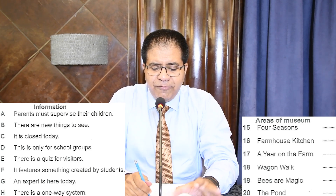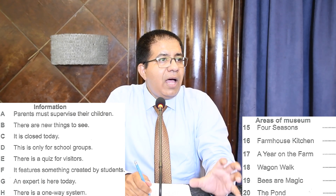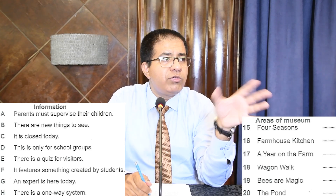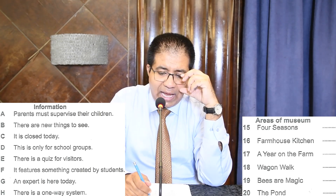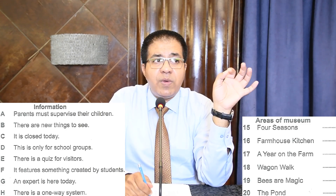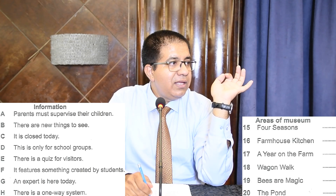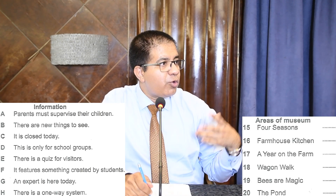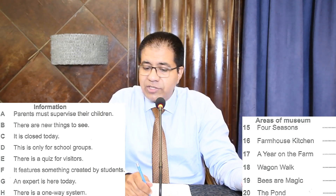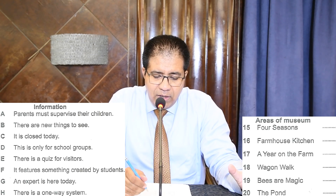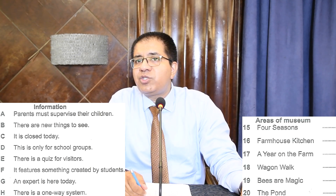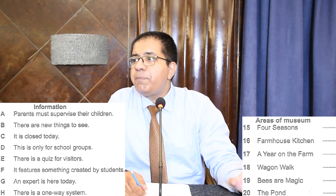Option D: this is only for school groups. Underline 'school groups.' Some part of the museum may be exclusively for school groups — a cafe or a room where children are shown a movie. Option E: there is a quiz for visitors. Underline 'quiz.' Which part of the museum has a quiz where visitors participate to show what they have learned?